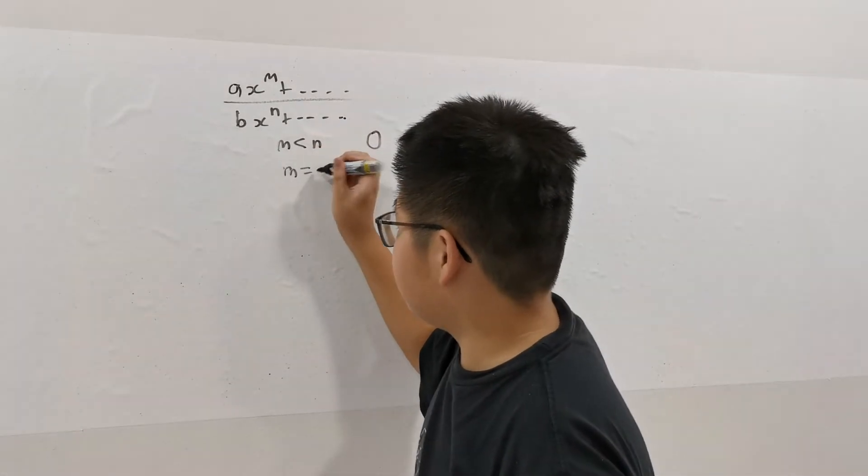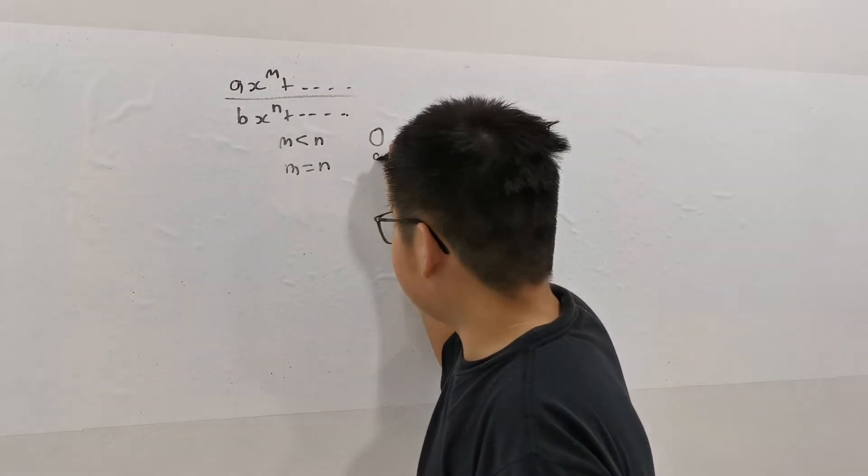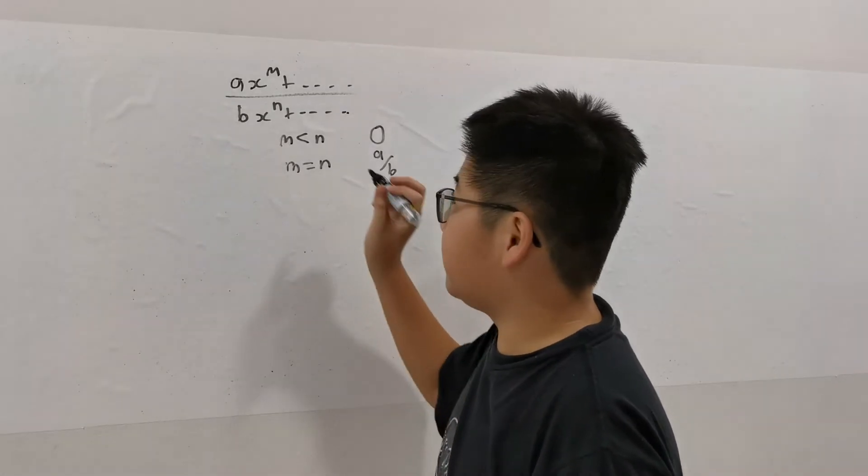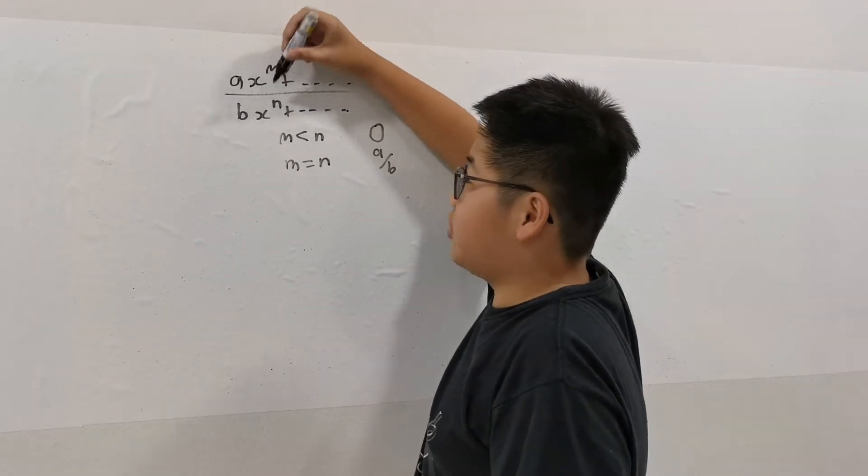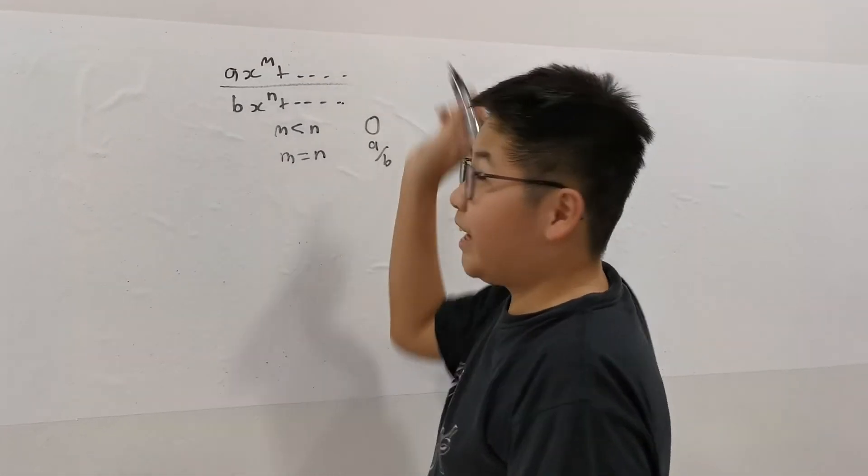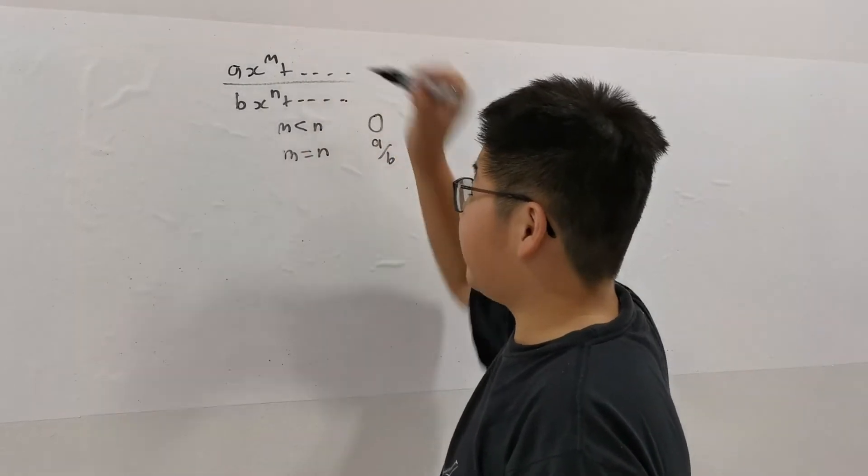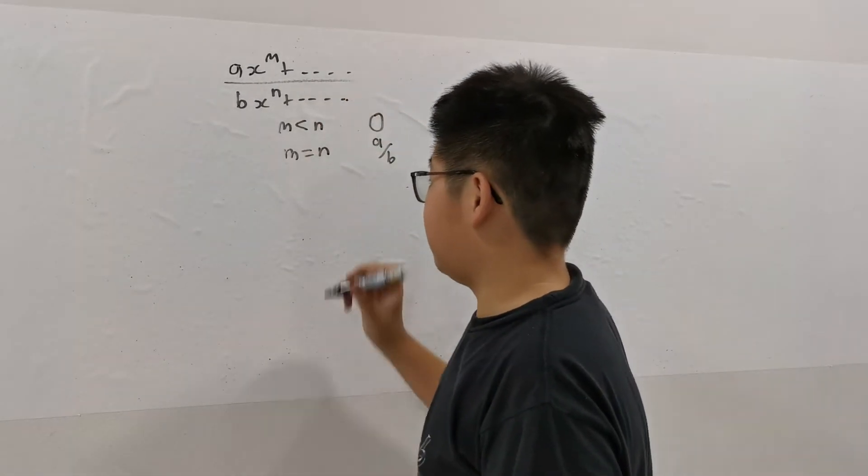How about when M equals N? It will tend to A over B. Because when you think about it, if it's AX^N over BX^N, basically all the other terms will dwarf that term and you can cancel out infinity and it will look like A over B.